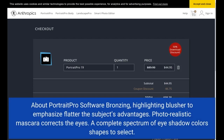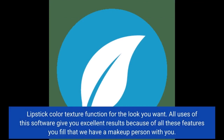About Portrait Pro software: bronzing, highlighting, and blusher emphasize and flatter the subject's advantages. Photorealistic mascara corrects the eyes, and a complete spectrum of eyeshadow colors and shapes are available to select. Lipstick color, texture, and function deliver the look you want. All these features make you feel like you have a makeup person with you.